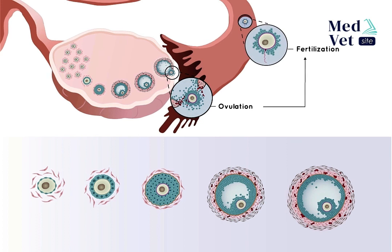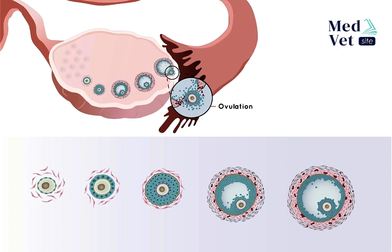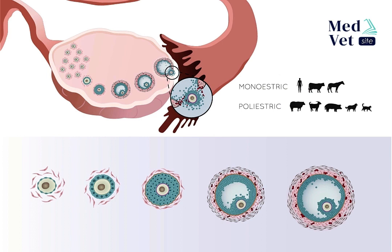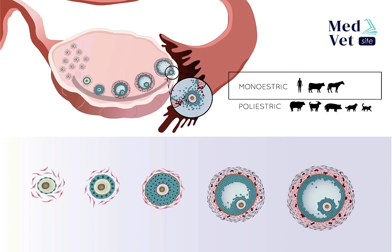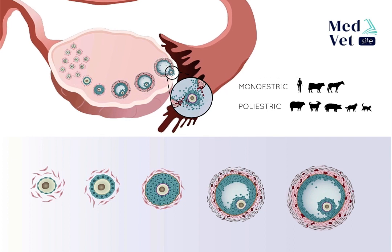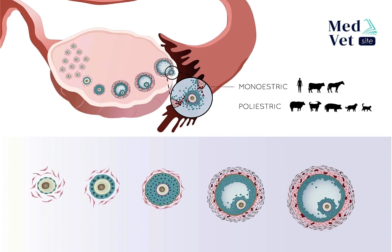However, not all oocytes in a group of follicles that begin to develop will end up being ovulated. The number of follicles that ovulate depends on the species. In monoestric females like humans, cattle, and horses, ovulation of only one follicle usually occurs per sexual cycle. In polyestric females such as sheep, goats, pigs, canines, and felines, ovulation of several follicles occurs simultaneously. Here we will explain the process leading to the ovulation of a single follicle, as typically happens in monoestric females.